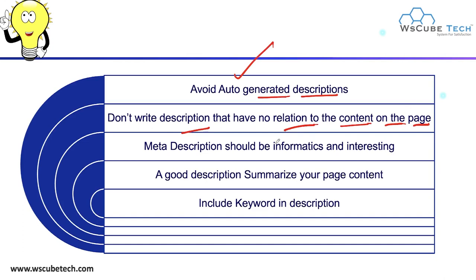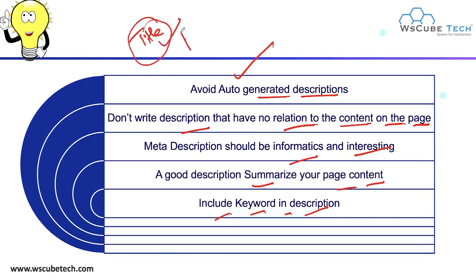Meta description should be informative and interesting. You have to take care of both — it must give information about your webpage, and it must be interesting enough that users want to visit your website after reading it. A good description summarizes your page content. Whatever information you have on your webpage, that is summarized in your meta description. Also, include your keyword in the description, just as you include keywords in your title.